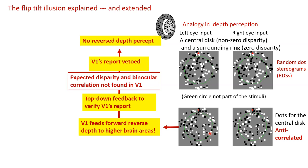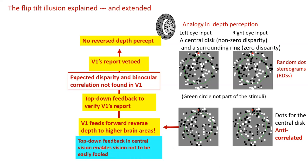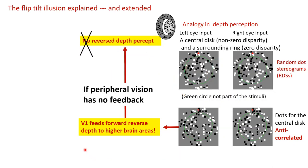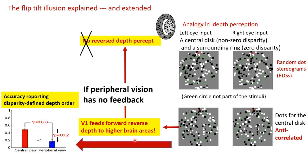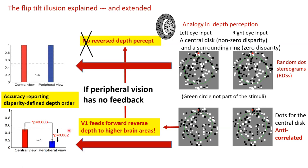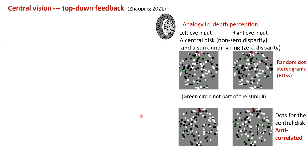Top-down feedback in central vision enables vision not to be easily fooled. However, if in peripheral vision you don't have this feedback, you will believe whatever the feedforward signal tells you. So we predict that reverse depth should be visible in peripheral vision. We tested this: observers made forced choices — in front or behind. In central vision, performance is at chance level. In peripheral vision, performance is much worse than chance — they are reporting the opposite depth. This is indeed the reverse depth, and it serves as a test of the central-peripheral dichotomy.